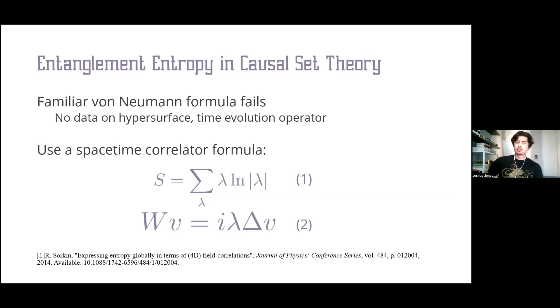Within causal set theory, we cannot use the conventional von Neumann entropy formula because there isn't really a notion of data upon the causal set analog of a hypersurface. This is manifest by the fact that there is no time evolution operator. We use an alternative formulation put forward by Raphael Sorkin, where we solve a generalized eigenvalue equation given by equation 2.